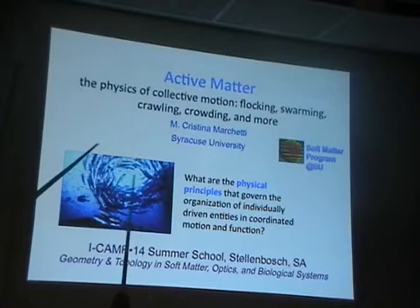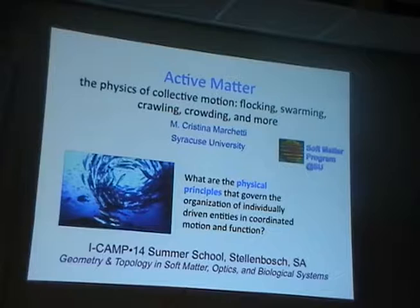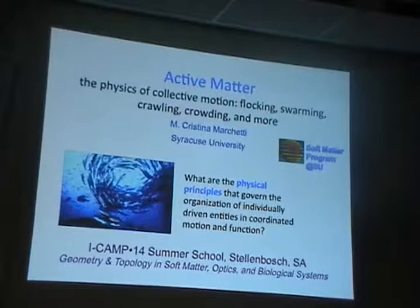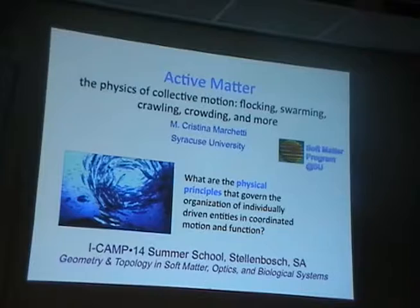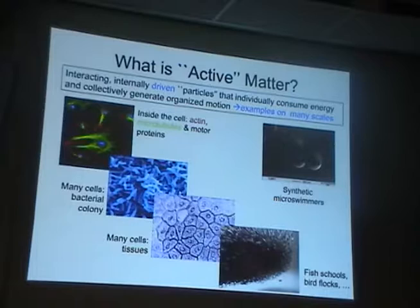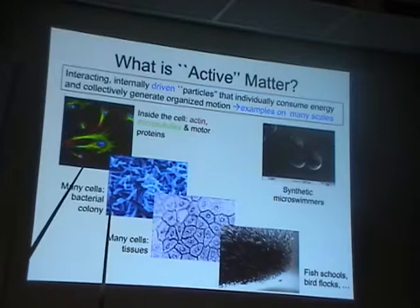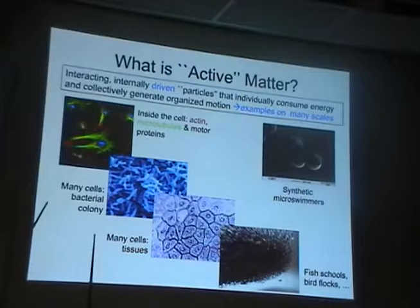This is an example of an active system. I won't really be talking about fish, but that's one of the examples that motivated this field at the very beginning, together with the phenomena of flocking of birds. The goal of the field is to identify and understand the physical principles that govern the organization of entities or particles that are individually driven or self-driven into coordinated motion on a larger scale. Active matter is a system of many particles that are interacting with each other and internally driven — each particle consumes energy and collectively they generate organized motion.